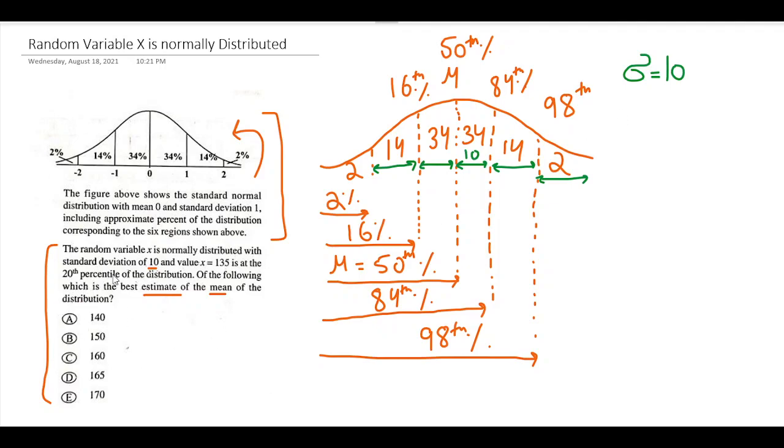The standard deviation is 10, and the value X = 135 is at the 20th percentile. So the 20th percentile is gonna be a little more right to the 16th percentile line, so it's gonna be somewhere over here. So why don't I draw it to the side so that it is more visual and easy to understand?